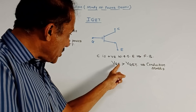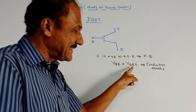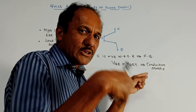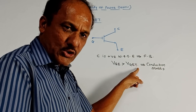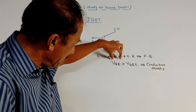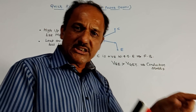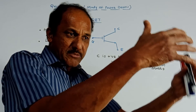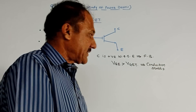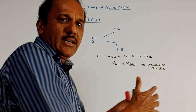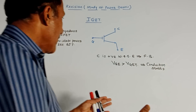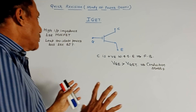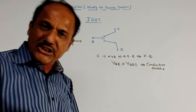The device will start conducting when VGE — gate-to-emitter voltage — is greater than VGET, which is the threshold level. Under the condition VGE greater than VGET, conduction starts. This is very similar to the power MOSFET, where a channel is formed and conduction starts. The construction is also very similar to that of the power MOSFET.